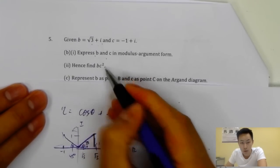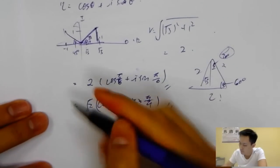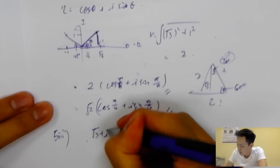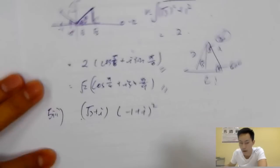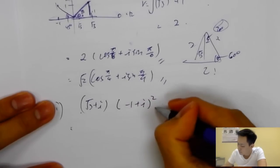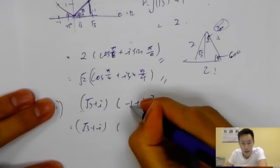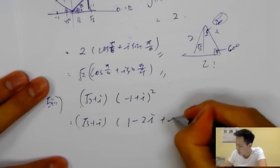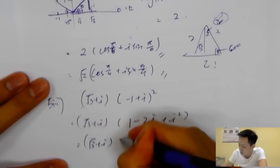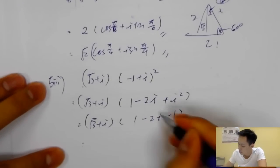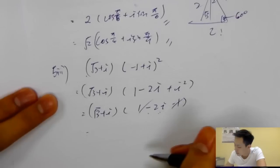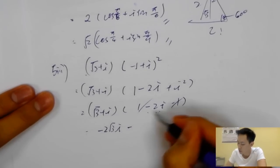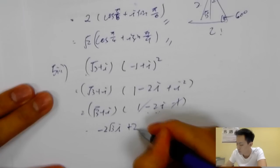Now find B times C squared. So that's (root three plus i) times (minus one plus i)^2. We expand (minus one plus i)^2 using A^2 plus 2AB plus B^2: one plus two times minus two i plus i^2, giving one minus two i minus one. The ones cancel, leaving minus two i. Multiplying in gives minus two root three i, minus two i squared, which equals two. Result is 2 minus 2 root three i.